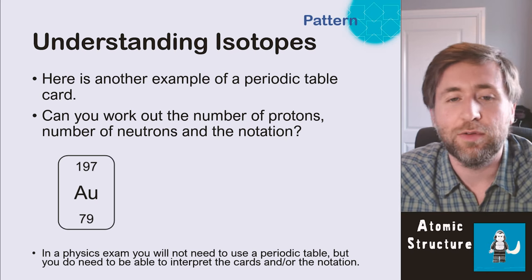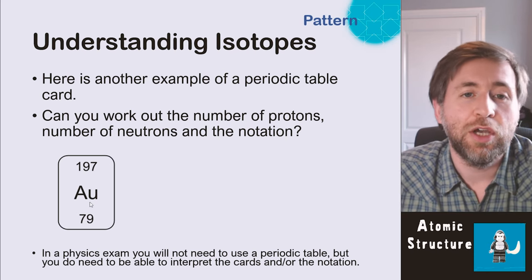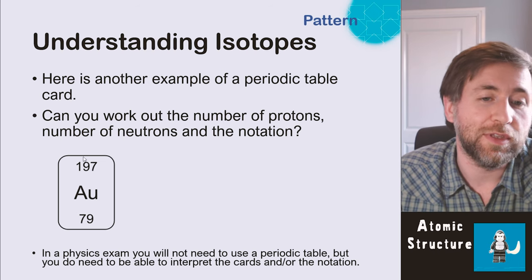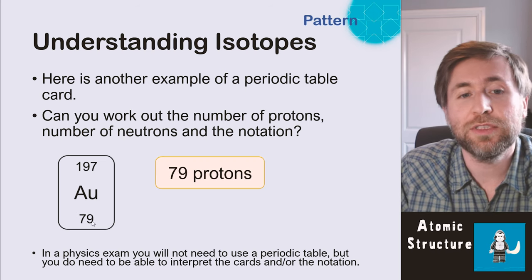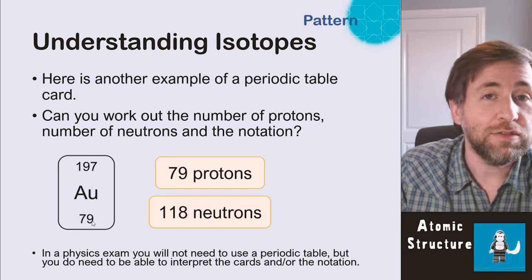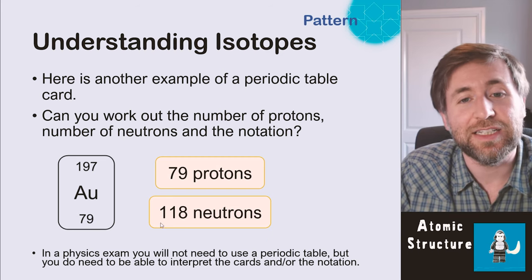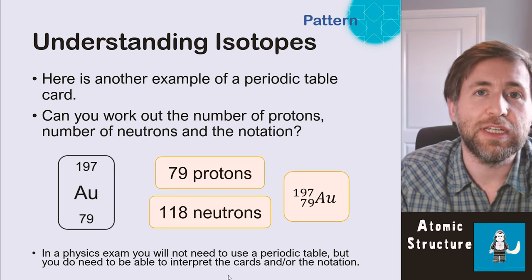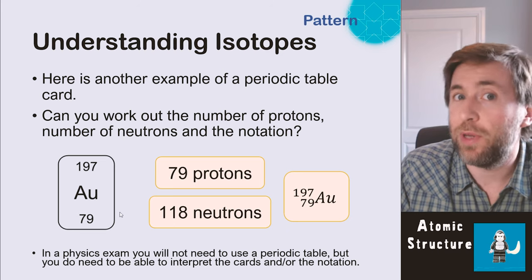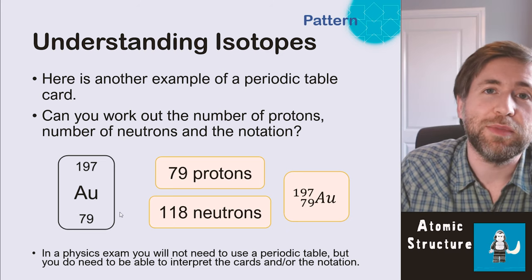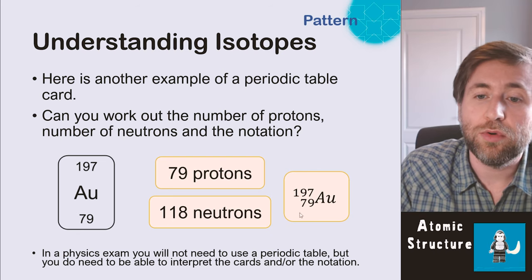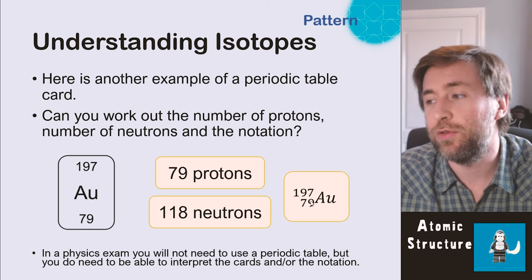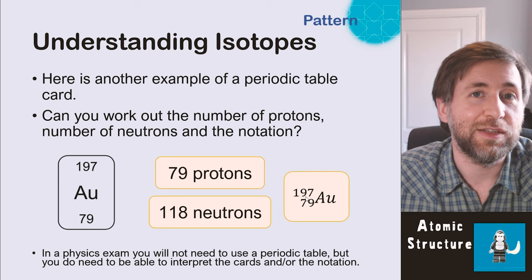So you really need to be very good at either working from a card like this or from notation to know exactly how many protons and neutrons there are. So if we have this, for example, then this is gold. We know there are 79 protons and we know there is 197 minus 79. So 118 neutrons. And we could write that notation like this. You won't be given a periodic table to use in the physics exam. You will in a chemistry exam. You might be given part of the period table, or you might be given a few cards from the period table, or you might be given this notation and need to work out the number of protons and number of neutrons.